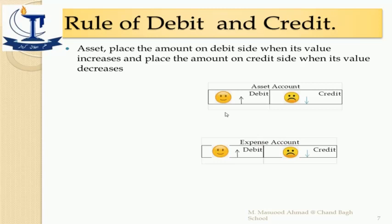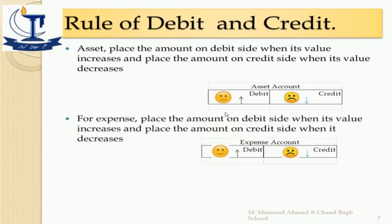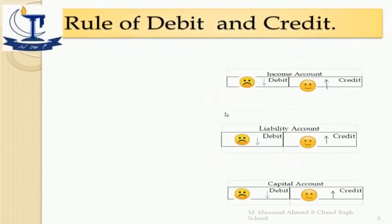For assets: place the amount on the debit side when the value increases, and place the amount on the credit side when the value decreases. The same case goes with expenses — place the amount on the debit side when they are increasing, and place the amount on the credit side when they are decreasing. For incomes, liabilities, and capital: whenever there is an increase, place the amount on the credit side of the ledger account, and whenever there is a decrease, place the amount on the debit side.